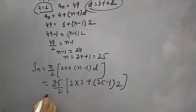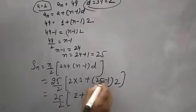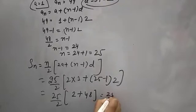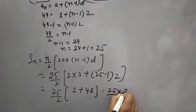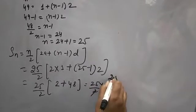So 2 into 1 plus 25 minus 1, d value is 2. So 25 over 2, 2 into 1 is 2, plus 25 minus 1 is 24, into 2 is 48. Means 25 over 2 into 48 plus 2 is 50. What will come? 25, 50.